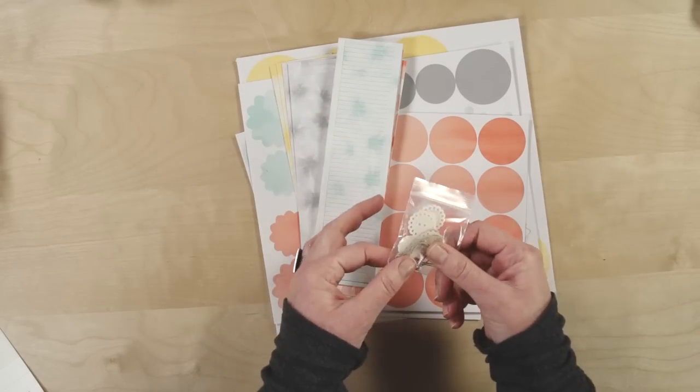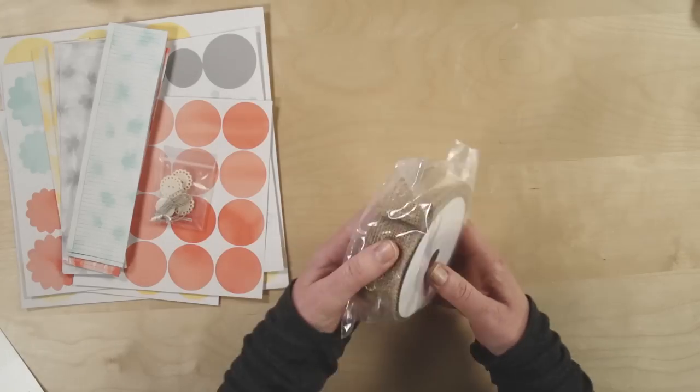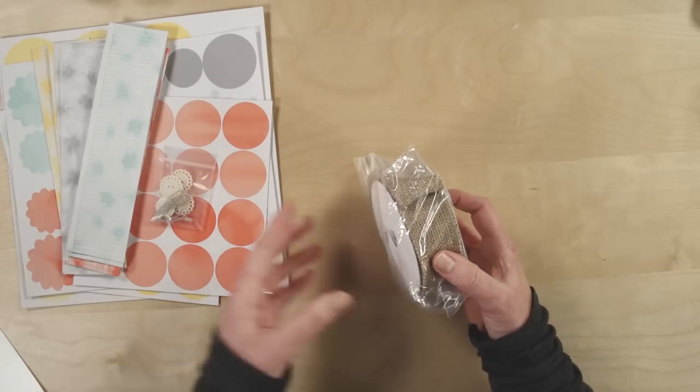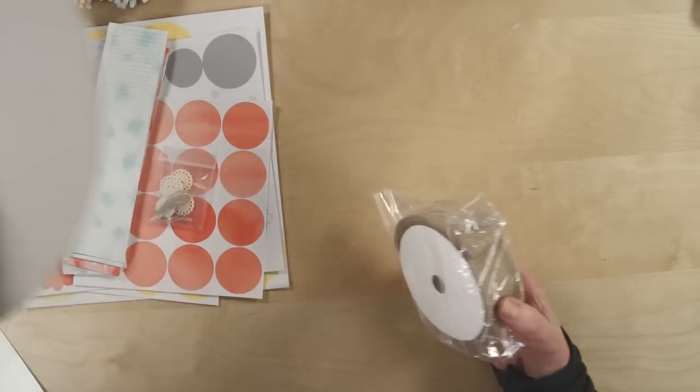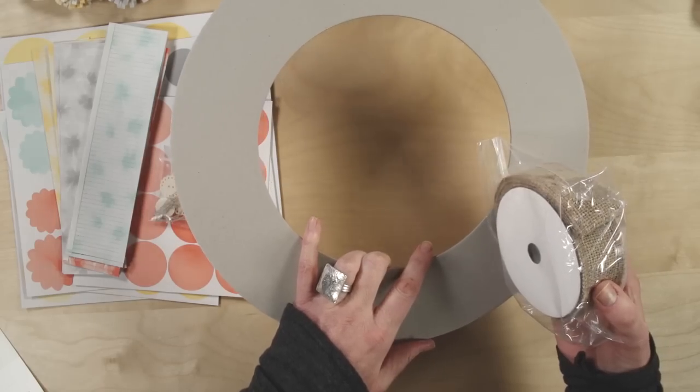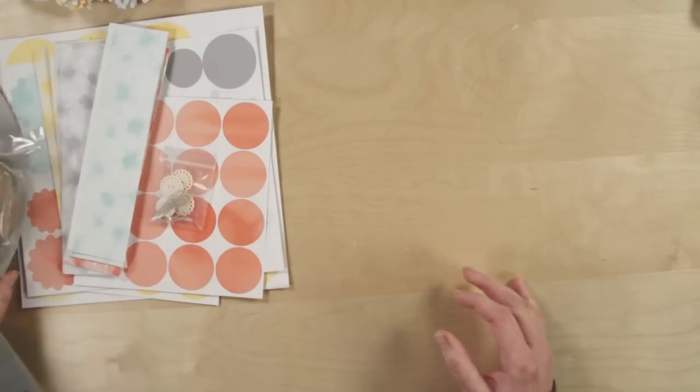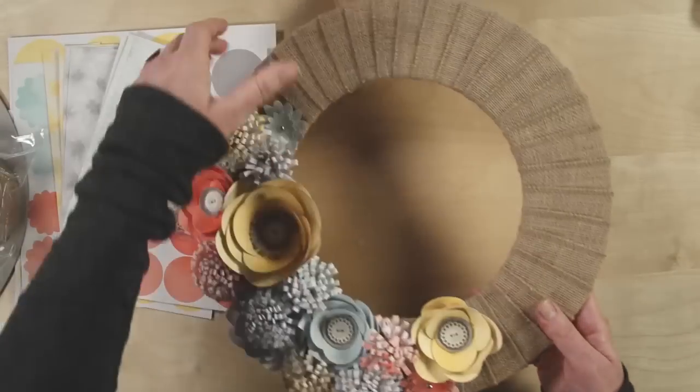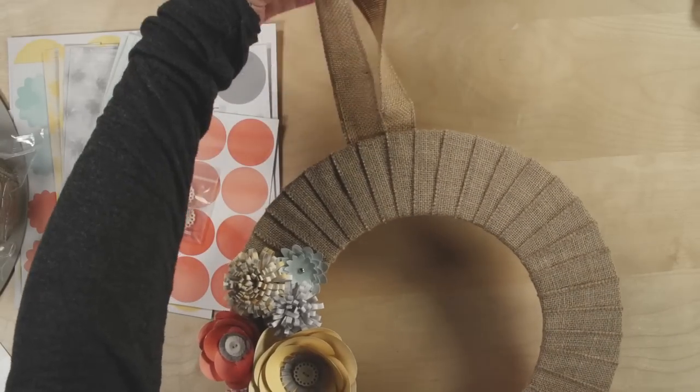You get some buttons that can go in the center of the flowers. Burlap that can be used to wrap the wreath. Here is the wreath. You can wrap that with the burlap. There's an extra piece to hang the wreath with, like this one here.